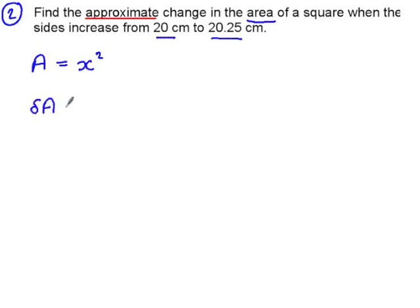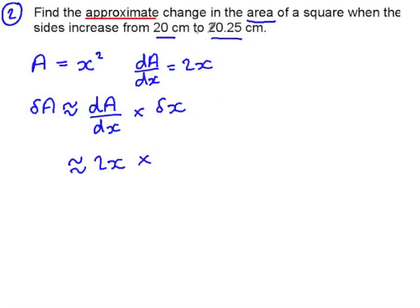And the approximate change in area, delta a, will be approximately equal to dA by dx multiplied by delta x. So dA by dx is 2x, and my small change in x is 0.25. So this is 0.5x.